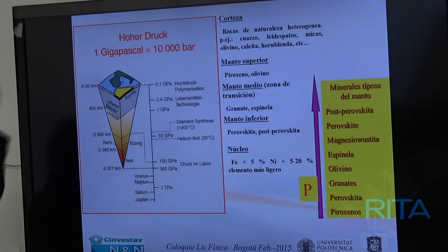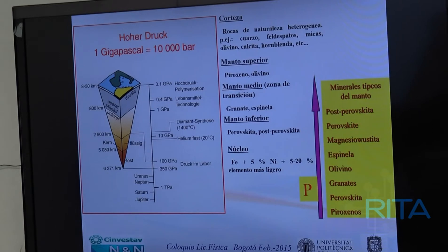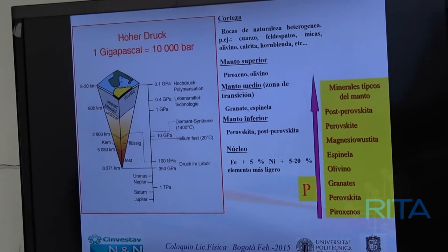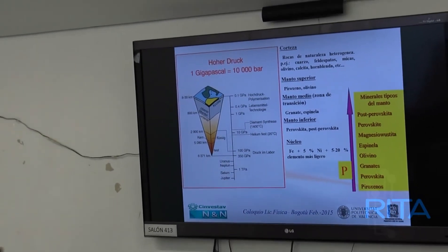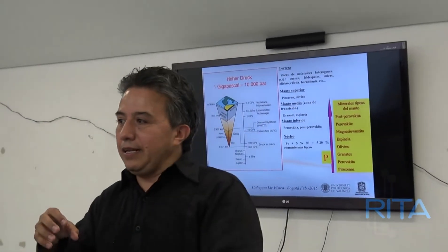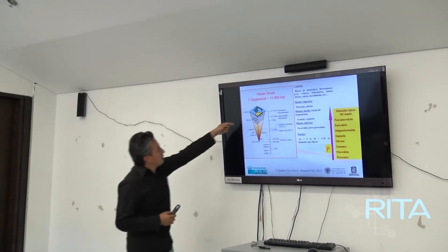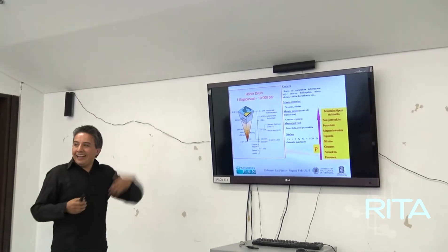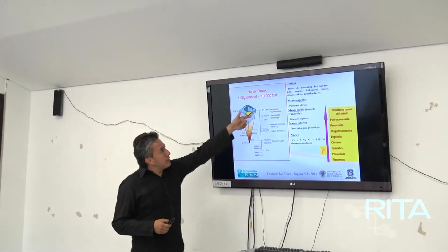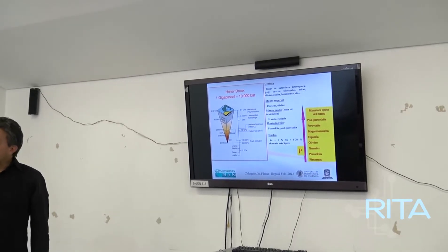Son materiales que salen en la corteza. A medida que uno desciende hacia el centro de la Tierra, las presiones son tan altas que, por ejemplo, debido a las altas presiones, los fósiles se convierten en petróleo y gas. Nuestro interés es estudiar a altas presiones los materiales: una cosa es una calcita en la superficie, y otra cosa muy diferente es esa misma calcita a 10 gigapascales, porque las propiedades del material van a cambiar completamente.